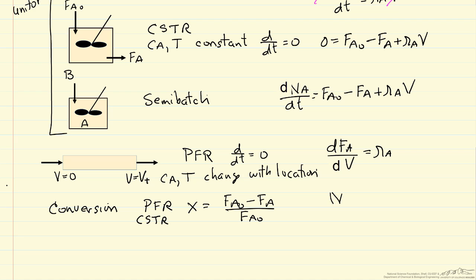For a batch reactor, it would be number of moles of A we start with, number of moles at a later time, over the number of moles of A that we start with.